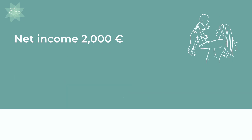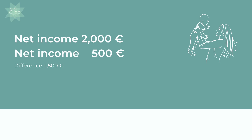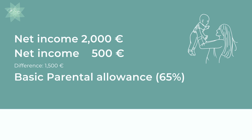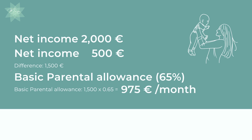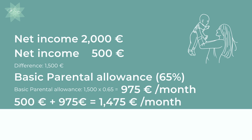In the second example, we have a mother that returns to work after 6 months, initially on a part-time basis, earning 500 euros a month. This changes the amount of basic parental allowance she receives. Her net income before the child's birth was 2,000 and after the child's birth it is 500, so the difference is 1,500. The basic parental allowance will be 65% of this difference, which is 975 euros per month. Together with her net income, this means she receives a total income of 500 plus 975, which is 1,475 euros per month.